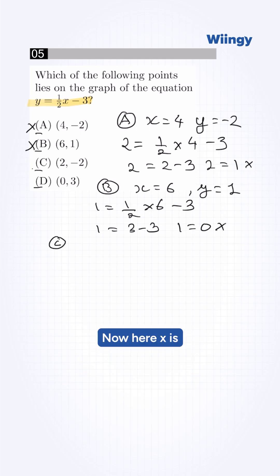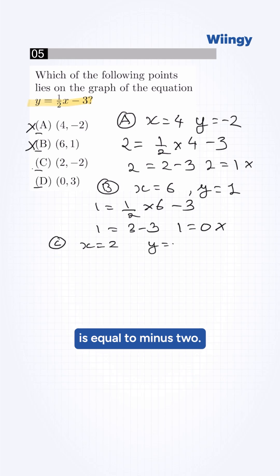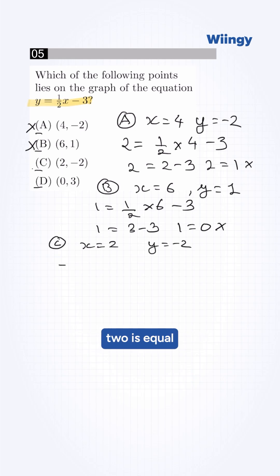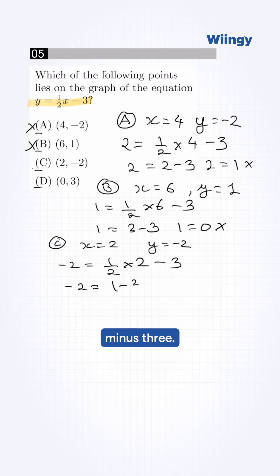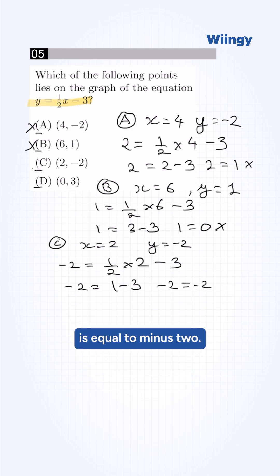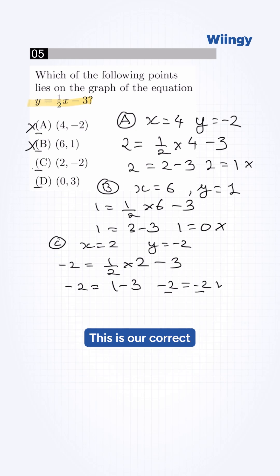Try option C. Here x is equal to 2 and y is equal to minus 2. Substituting: minus 2 is equal to 1/2 times 2 minus 3, which gives minus 2 is equal to 1 minus 3, so minus 2 is equal to minus 2. The left-hand side equals the right-hand side — this is our correct answer. The correct option is C.